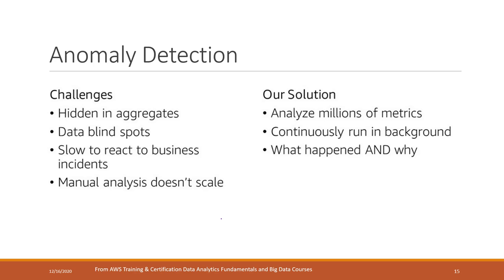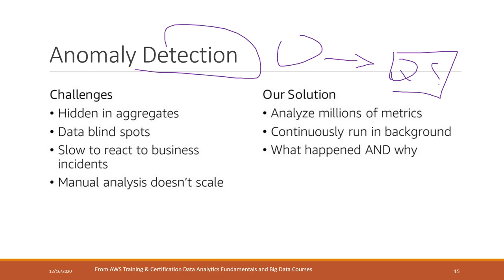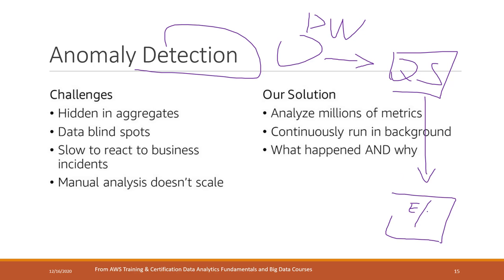Anomaly detection will analyze millions of records. It runs continuously in the background and can tell you what happened and also why. You can also define alerts using QuickSight. Your data will be constantly loaded into QuickSight — probably from a data warehouse or database — and QuickSight will continuously check and calculate anomalies. You can set the duration and frequency, and if an anomaly is detected, it can alert you by sending an email or pushing a notification to your cell phone.